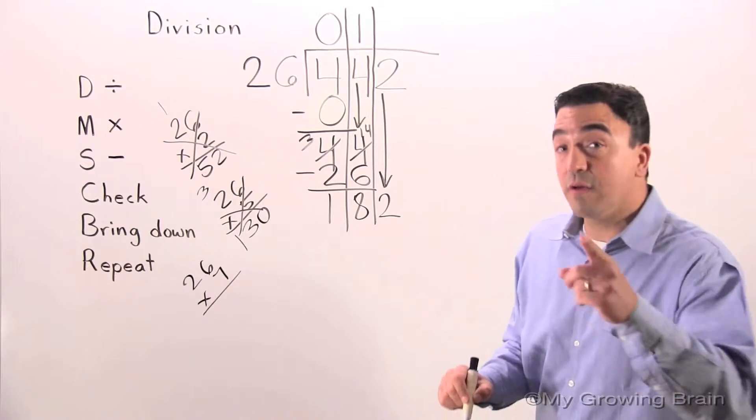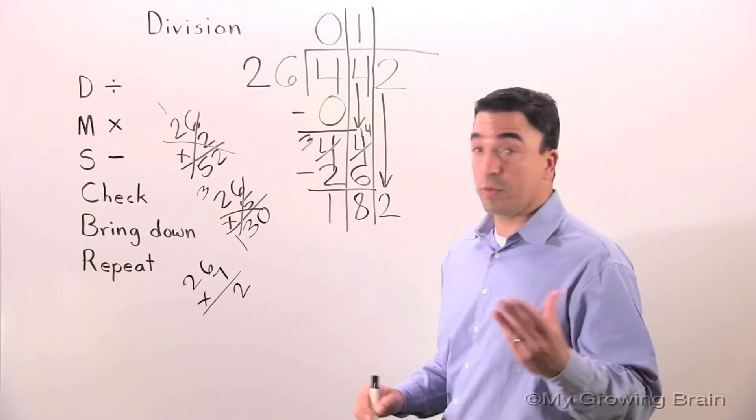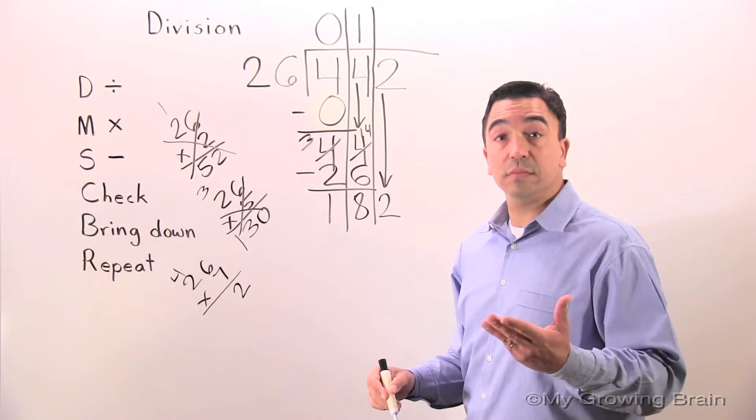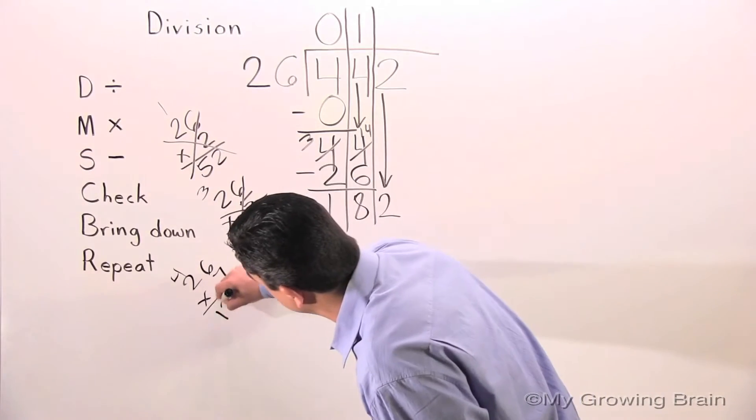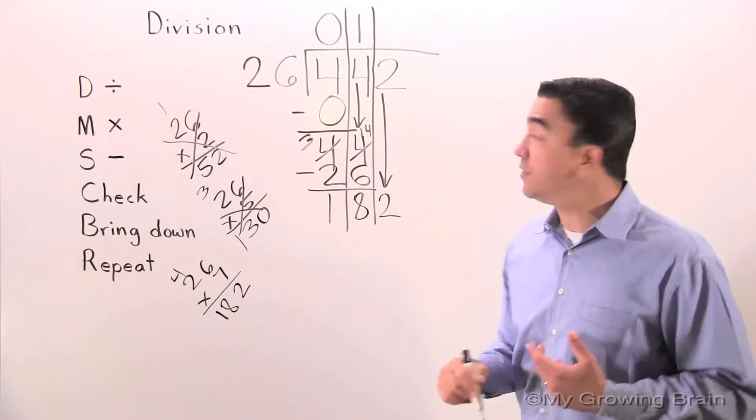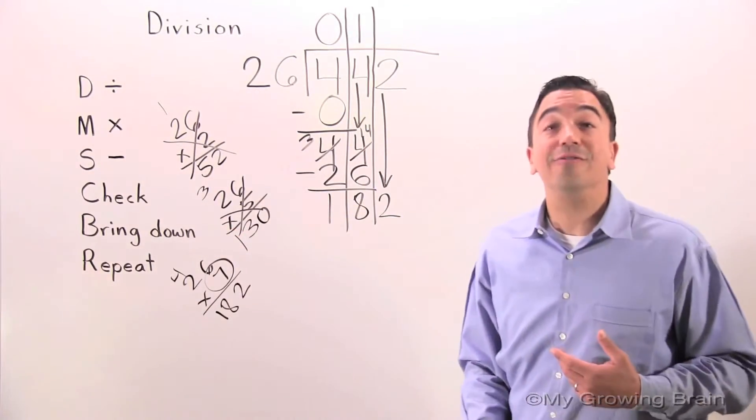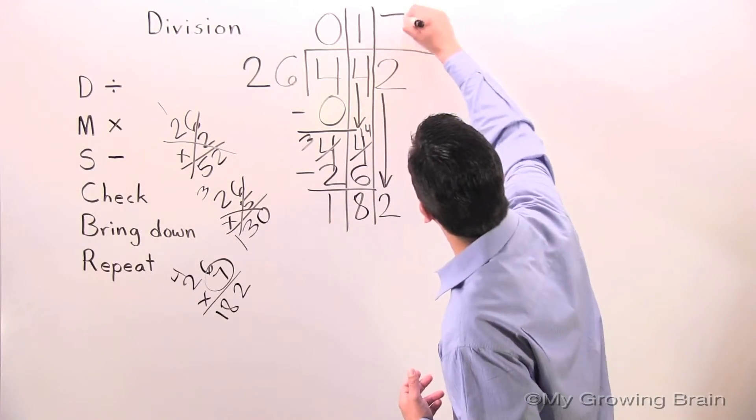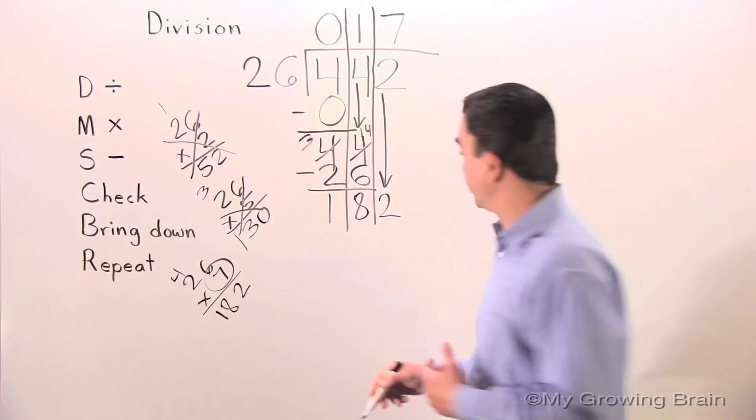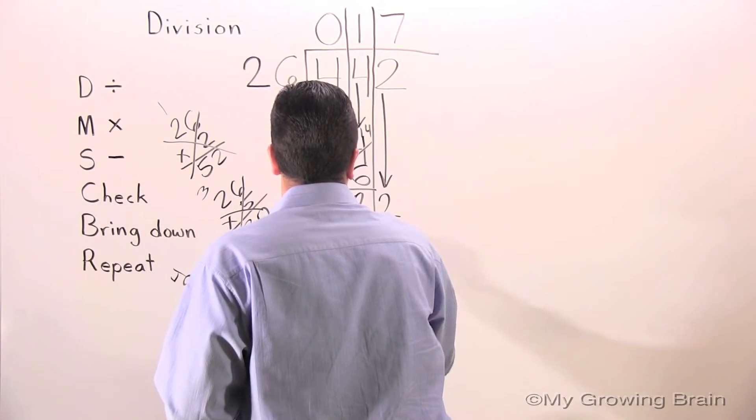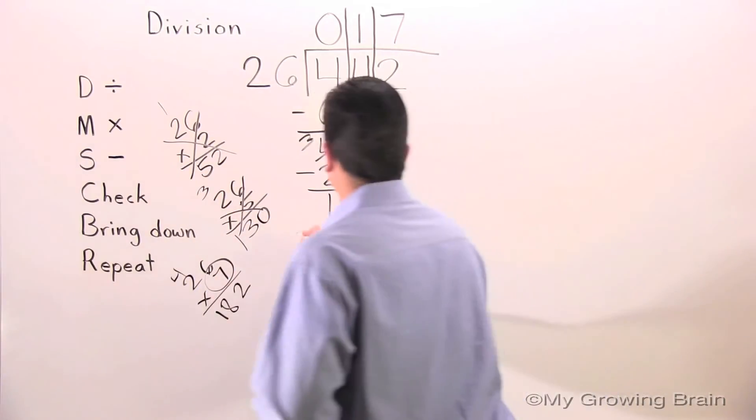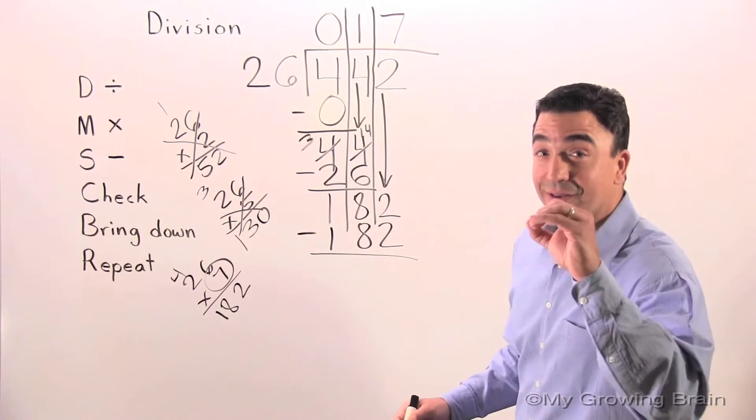7 times 6? 42. Regroup the 4. 7 times 2 is 14. Plus 4? 18. What do you know? So that tells us 26 can go into 182 7 times. Multiply. 26 times 7? 182. Next step. Subtract. 182 minus 182? 0.